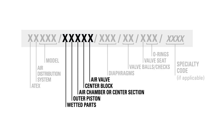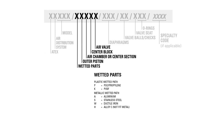The second section identifies the pump's external components, including the wetted parts, outer piston, air chamber or center section, center block, and air valve. The first digit in this section outlines the material of construction for the wetted parts of the pump, which consists of the outer chambers and the manifolds. Wilden offers various plastic and metal material options depending on the application requirements.